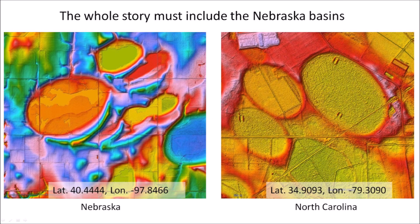The story of the Carolina Bays is not complete without including the Nebraska Rainwater Basins, which are also elliptical. The orientations of the basins in Nebraska and the East Coast converge by the Great Lakes. The elliptical geometry, the raised rims, and the orientation toward the common point are clues that should not be ignored.